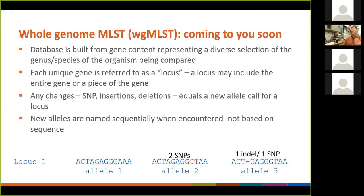It's a chronological addition of names. Every time two genes are different at a loci, we're going to call them different alleles. That causes a couple of challenges, because it's chronological — I might say gene one, allele one and allele two, they've got to be more similar to each other than allele one and allele 500. Not true! Because we simply add them chronologically when we discover them, not by similarity. So don't get fooled by whole genome MLST data, thinking that just because the allele numbers are similar, the sequences are similar. They can be very different.